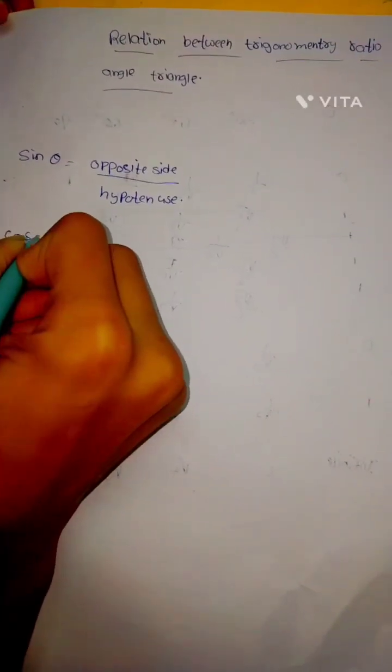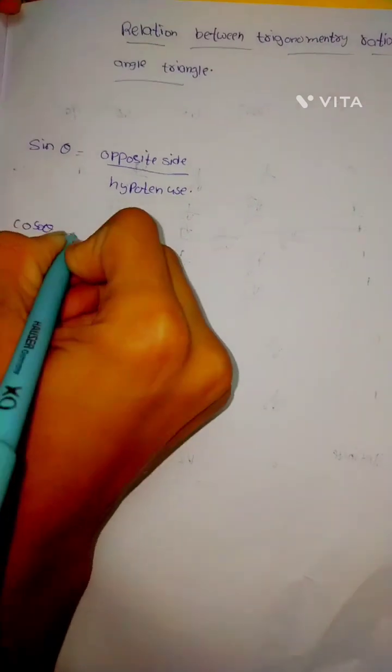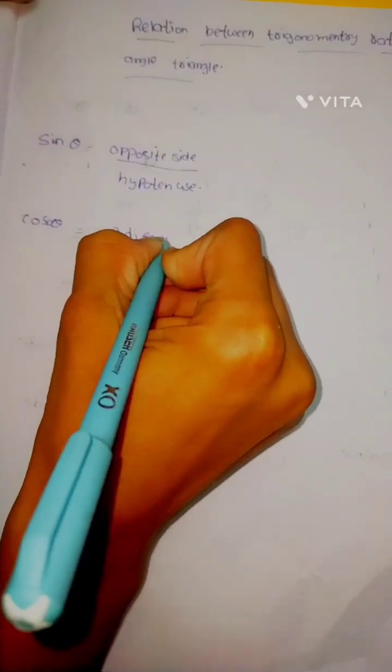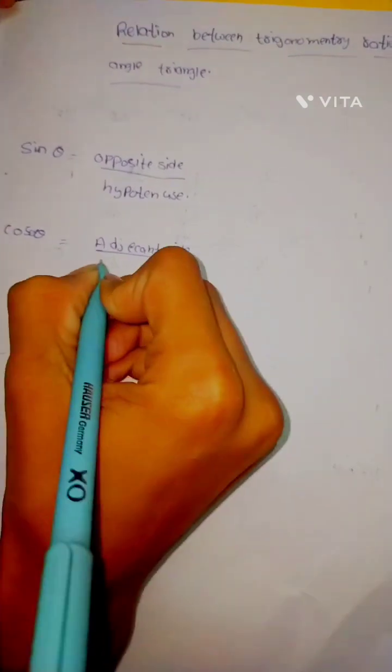Second, Cos Theta equals Adjacent Side by Hypotenuse.